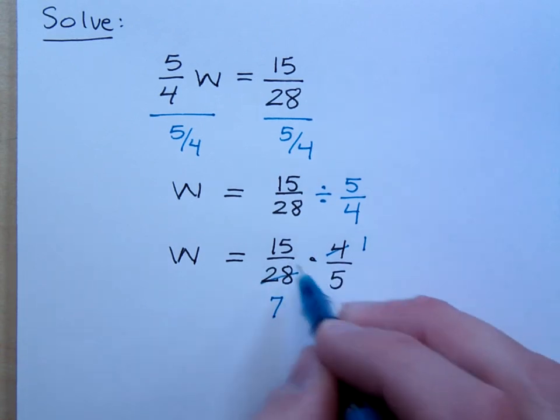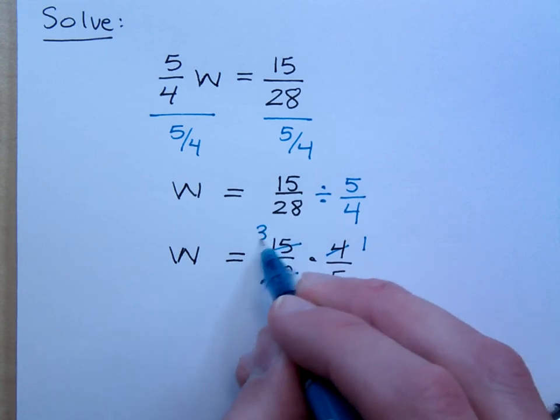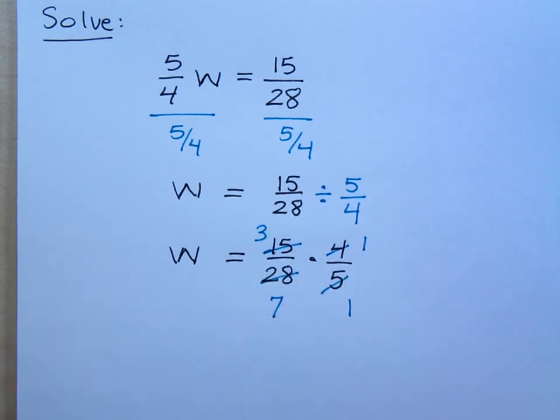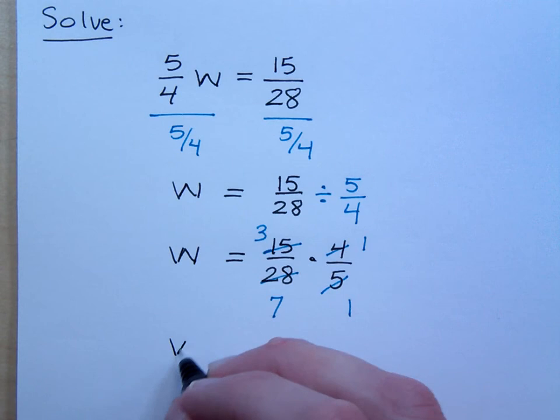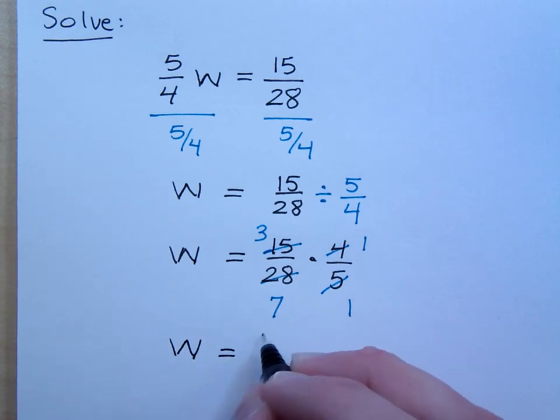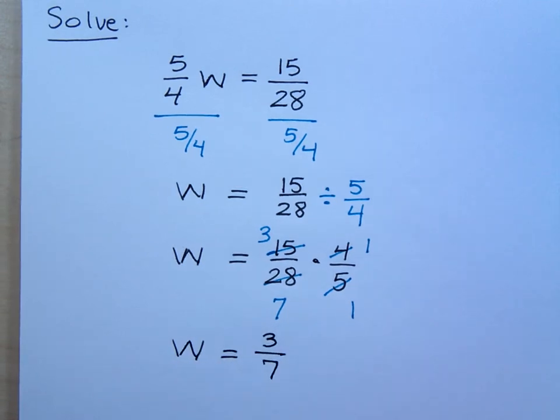5 and 15. 15 and 5 reduce by a factor of 5. So you get 3 and you get 1. So what is your answer here? It's just 3 7s.